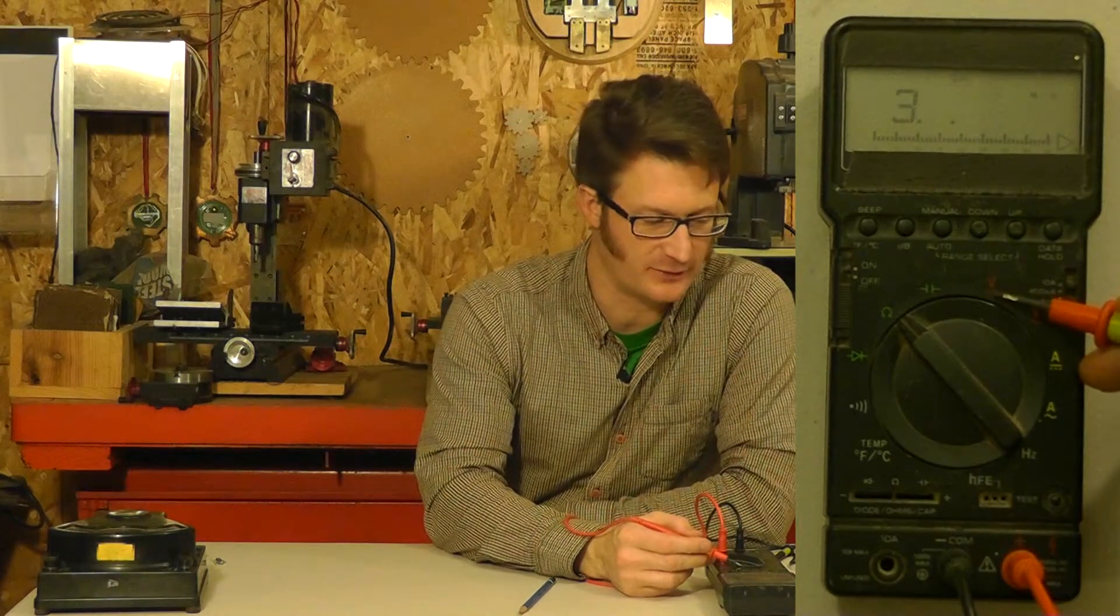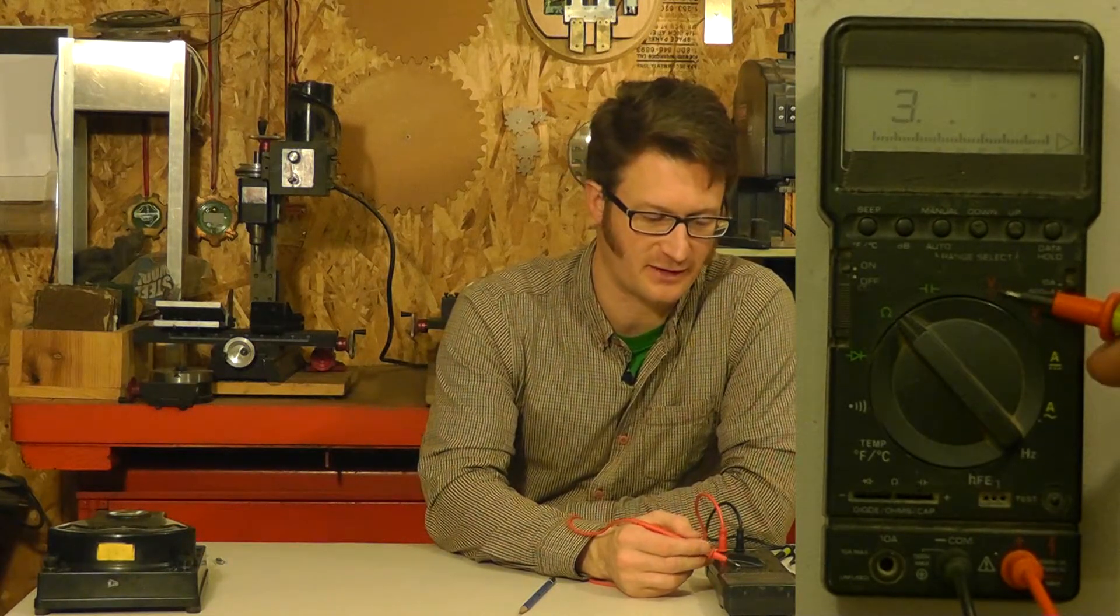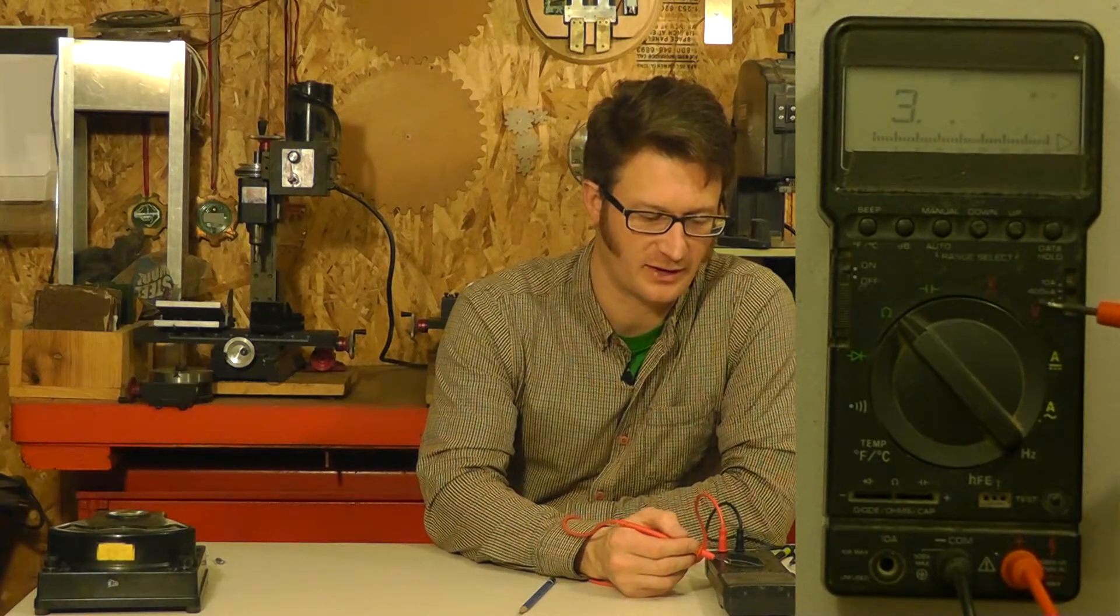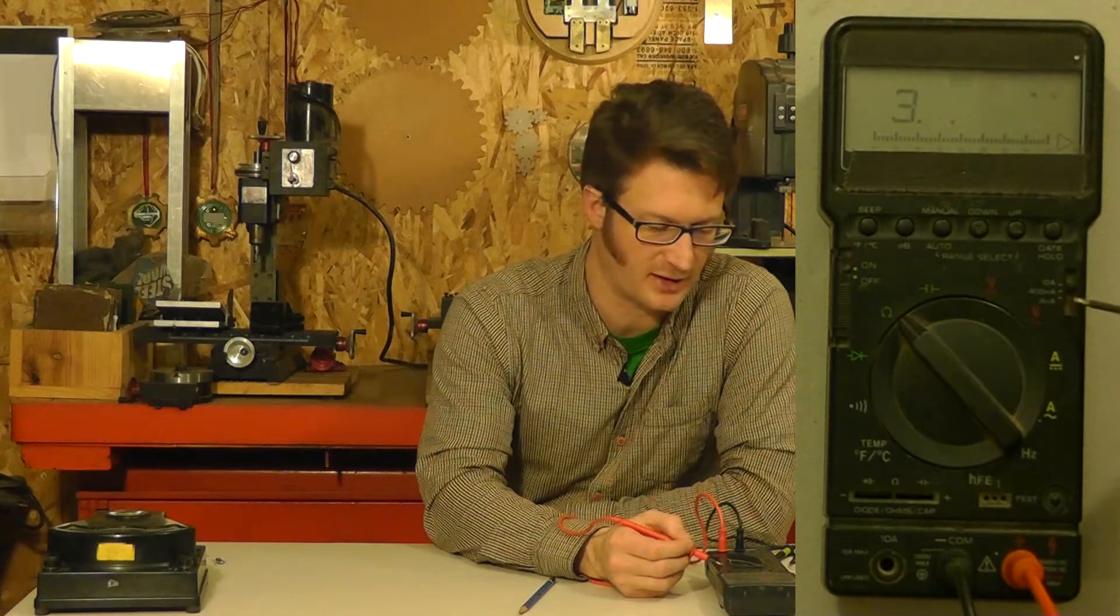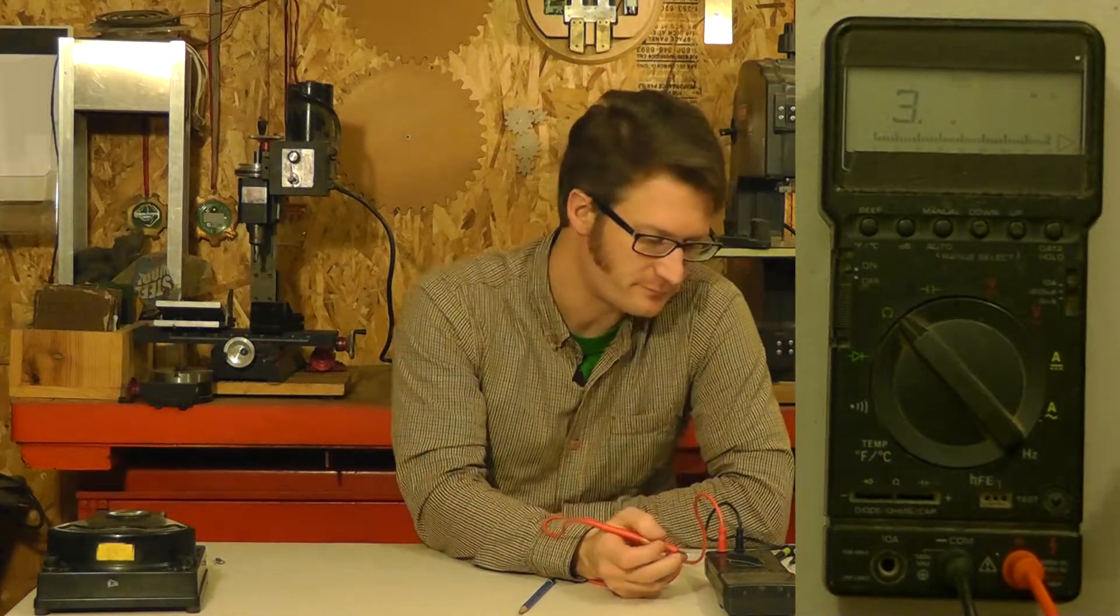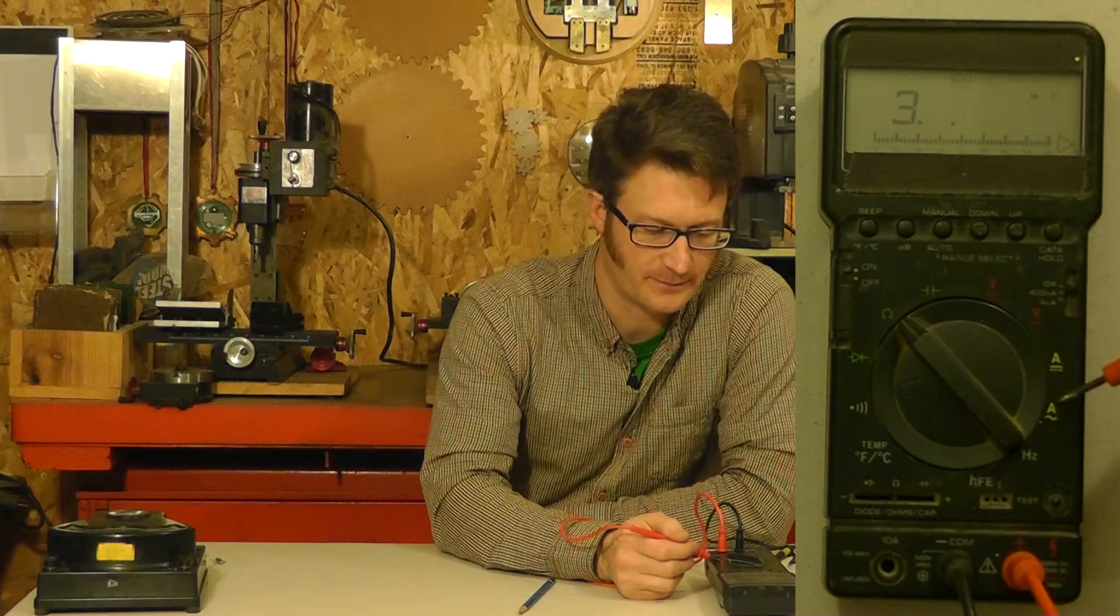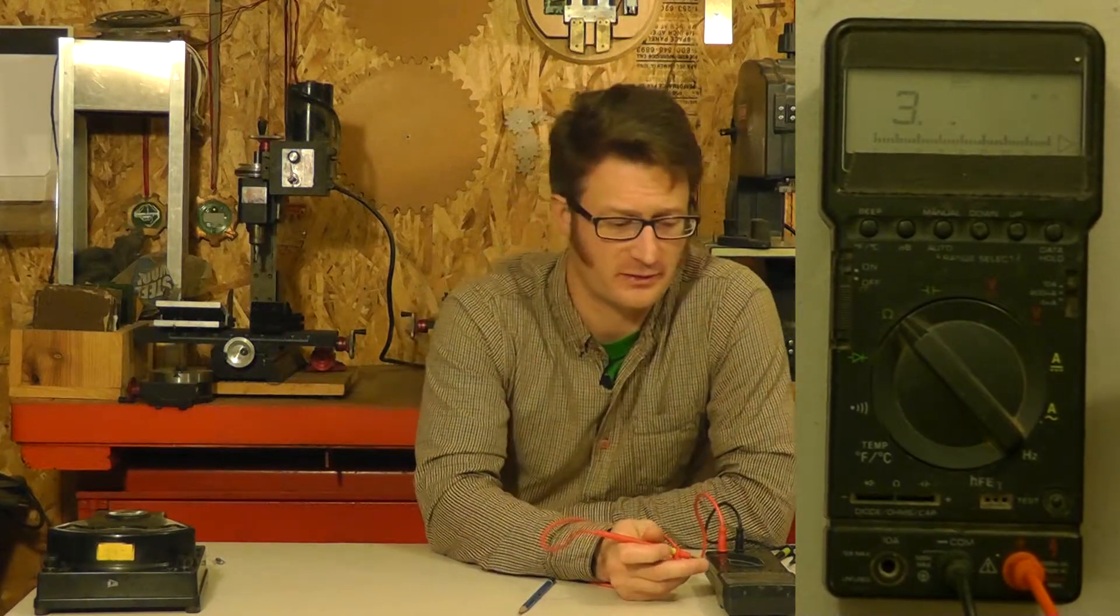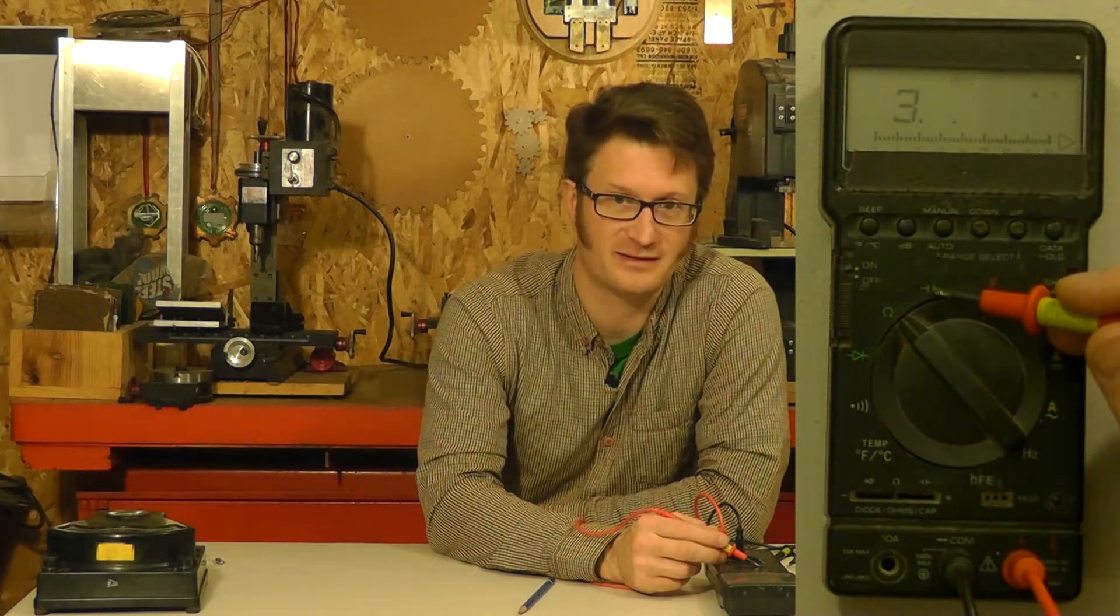So this multimeter can do everything that the other one could. It does DC volts, which is often shown - DC is often signified with a straight line and dotted straight lines under it. AC is typically shown with a little wavy line, a little sine wave. I can measure resistance, and my current's over here. Now, it varies from model to model what other sort of stuff you will find. And so this one can measure capacitance.